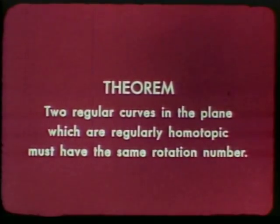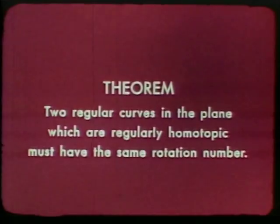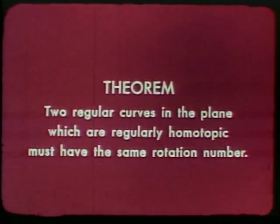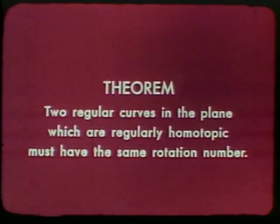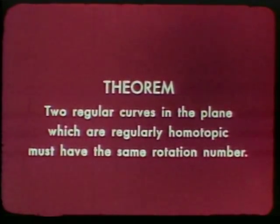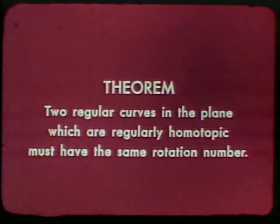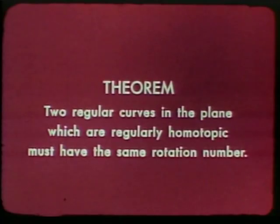What is the rotation number of a figure eight? It is zero. Now we will prove this theorem: two regular curves in the plane which are regularly homotopic must have the same rotation number. If this theorem is true, then there is no regular homotopy between the circle and the figure eight, because they have different rotation numbers.